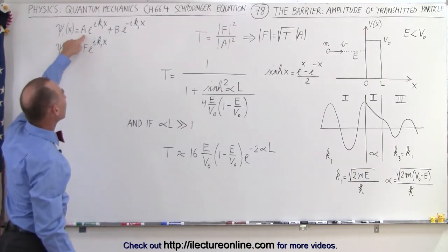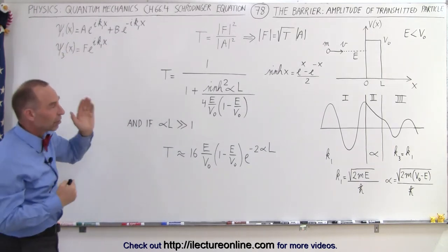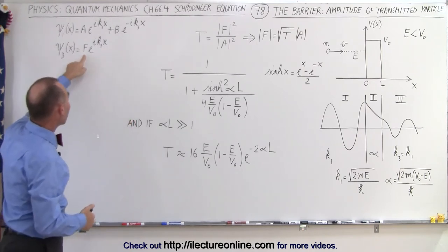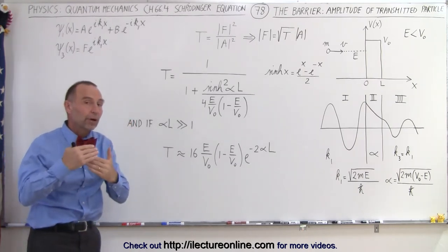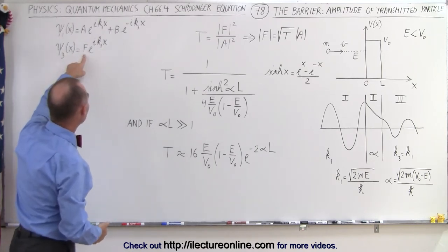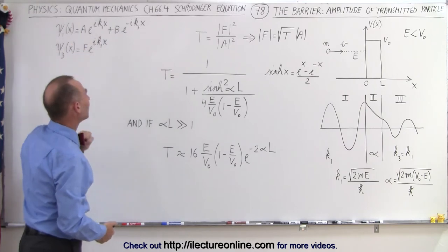A here represents the amplitude of the oscillations of the particles in region 1 moving from left to right, and F here represents the amplitude of the particles in region 3 moving from left to right. And we want to find the amplitude of F relative to the amplitude of A.